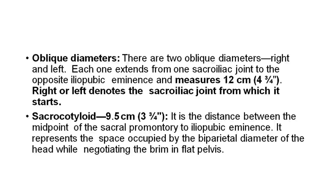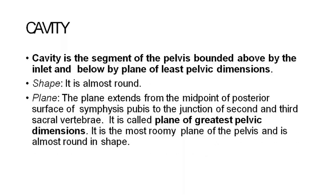Oblique diameters: There are two oblique diameters — right and left. Each extends from one sacroiliac joint to the opposite iliopubic eminence and measures 12 cm. Right or left denotes the sacroiliac joint from which it starts. Sacrocotyloid diameter is 9.5 cm — the distance between the midpoint of the sacral promontory to the iliopubic eminence. It represents the space occupied by the biparietal diameter of the head while negotiating the brim in a flat pelvis.